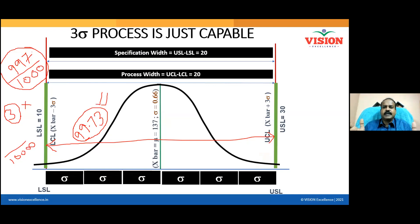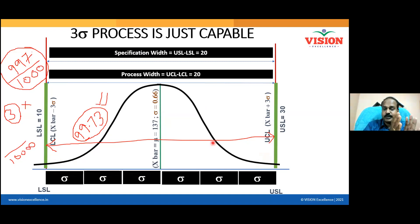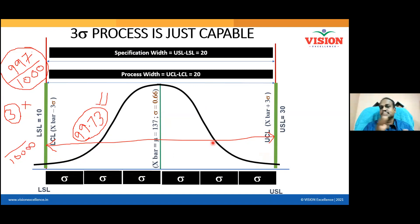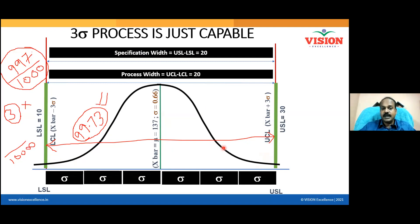When demand increases, your capability will come down. The process deteriorates in the sense that this bell-shaped curve will either have its spread increase too much, or the whole process might move to the right or left. If the whole process moves to the right, the center shifts. If the spread increases, the control limit will expand — already my control limit is stretching to the specification limit, and if the spread increases further, control limits will go beyond specification limits and rejections will increase.